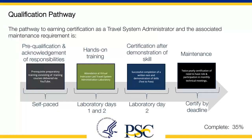The pathway to earning certification as a travel system administrator and the associated maintenance requirement is as follows. First, pre-qualification and acknowledgement of responsibilities. Second, prerequisite preparatory training consisting of training courses delivered via YouTube — this phase is self-paced. Third, hands-on training, referring to attendance at the virtual instructor-led Travel System Administration Laboratory, which occurs over laboratory days 1 and 2. Fourth, certification after demonstration of skill — successful completion of a written test and demonstration of skills test to pass.